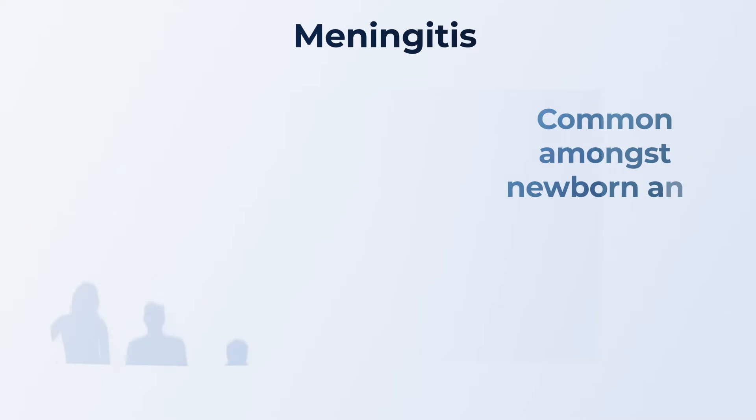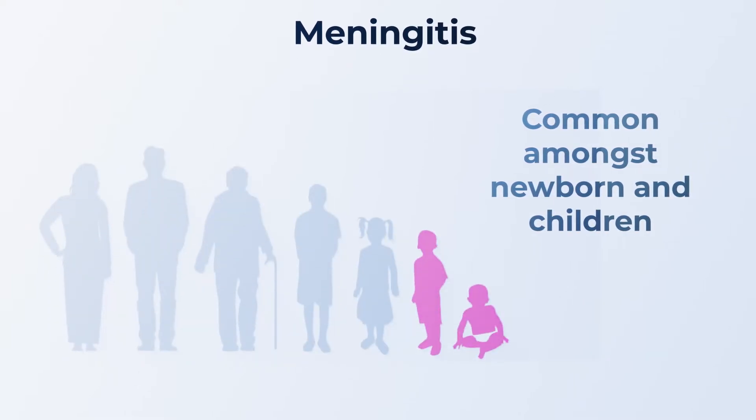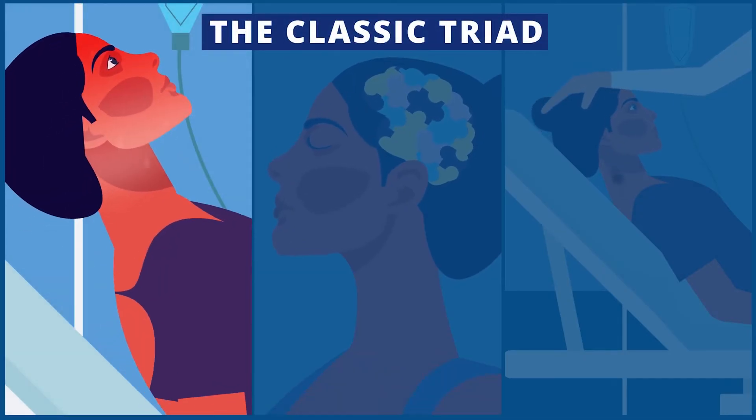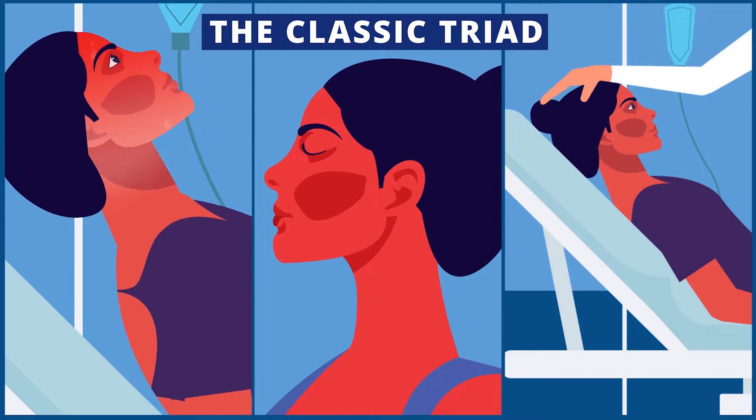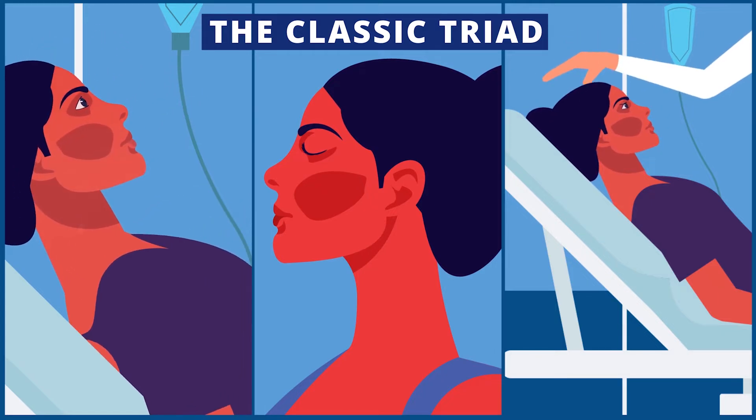The most serious form is bacterial, and a person of any age can get it, but it's more common in children. Most of the time the child gets very high fever, along with headache, and the child starts to vomit. When you have these three conditions — vomiting, headache, and high fever — you should consider the possibility of meningitis.